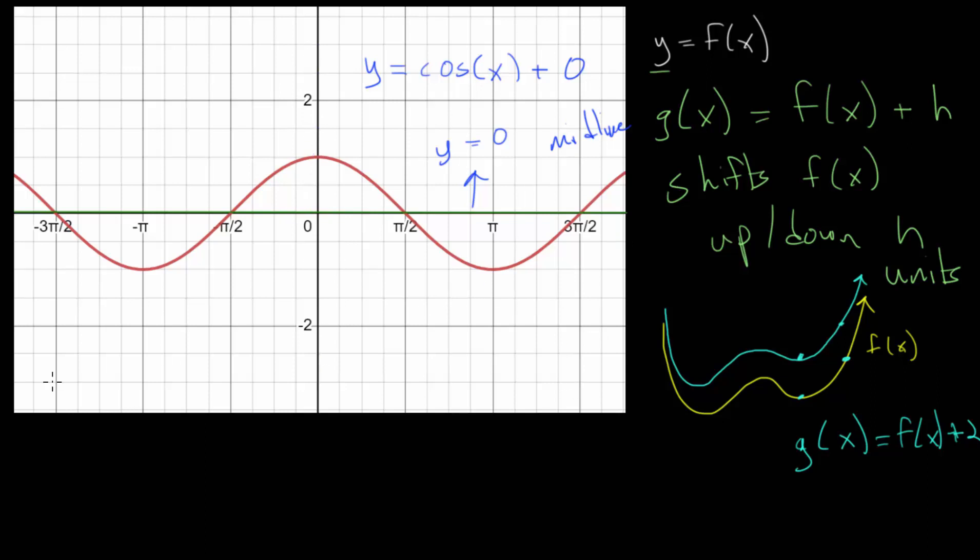So let's say we're looking at y equals cosine of x minus two. That will essentially take each of these different y values on our original parent function and now shift it all down two units, since every y value will be two units less than what it originally was.